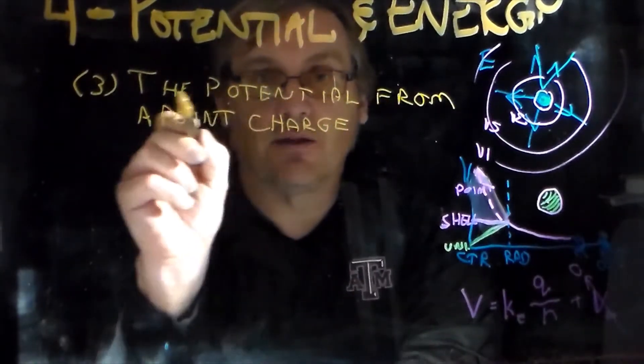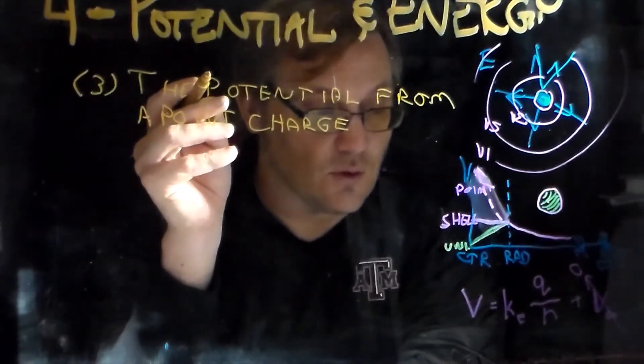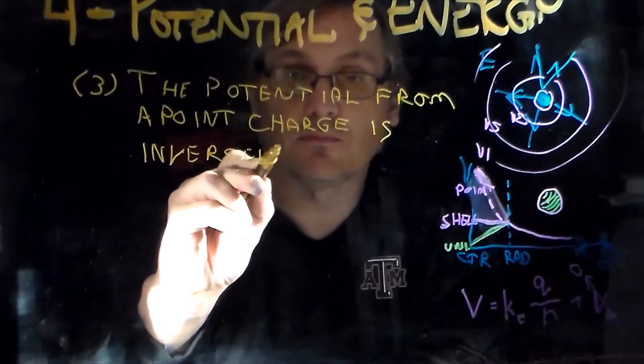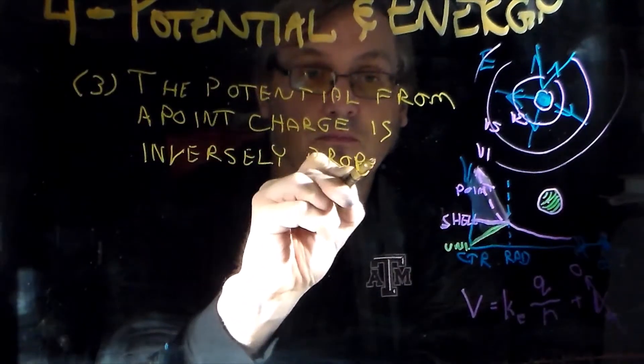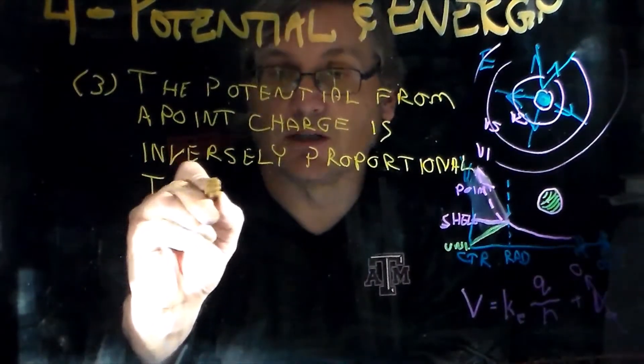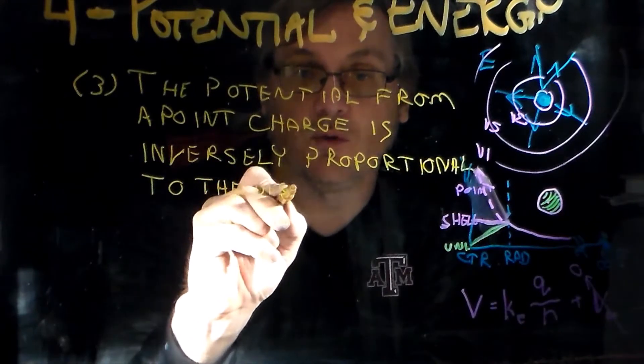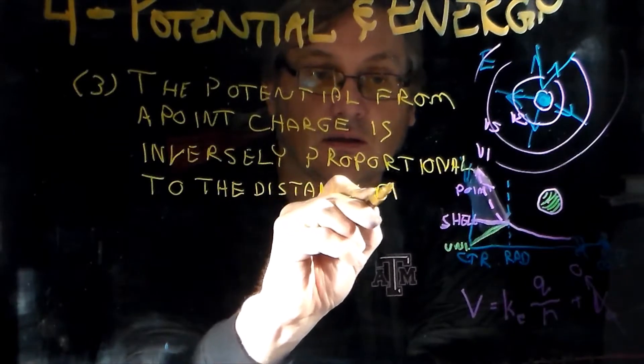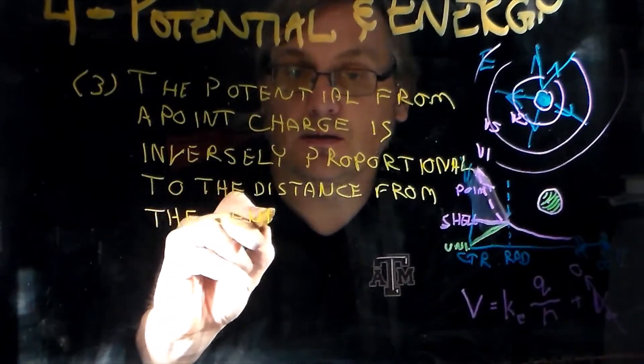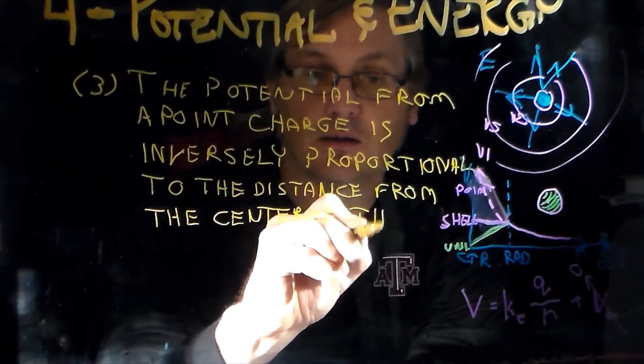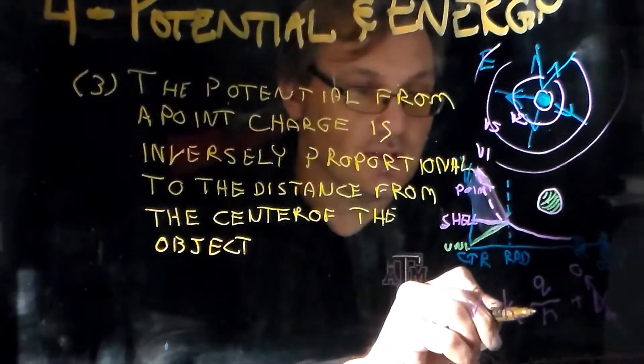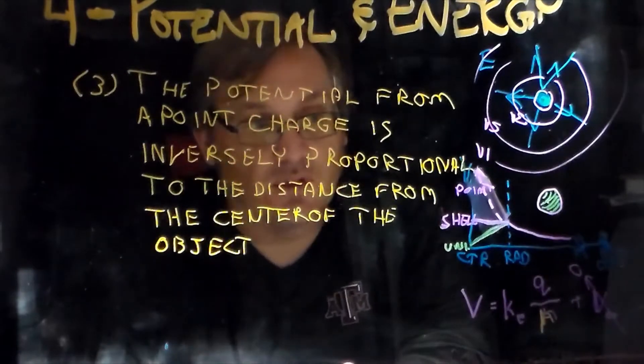So we just say that it's zero at infinity. Alright, so we have the potential from a point charge or a spherical source is inversely proportional to the distance from the center, or the distance from the point. Alright, and that's what this is. This is one over r here, right? One over r. It gives you something that's inversely proportional.